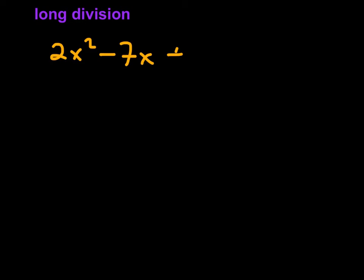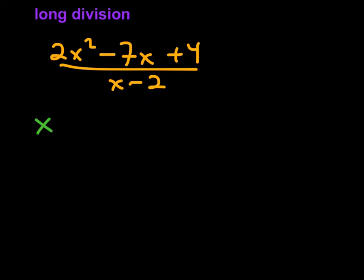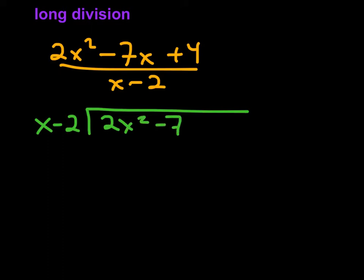I want to divide 2x squared minus 7x plus 4, all divided by x minus 2. Hopefully you're recognizing this and thinking, why wouldn't you use synthetic division? Because this right here is a first degree binomial, which is great. But sometimes what's in the denominator is not a first degree binomial — say it was x squared minus 2, or x squared plus 3x minus 2. So we're just going to practice with an easy one. x minus 2 divides into 2x squared minus 7x plus 4.